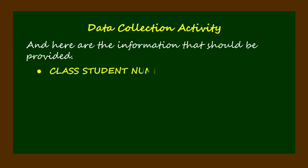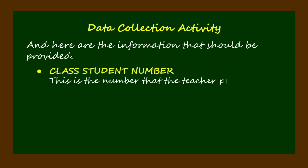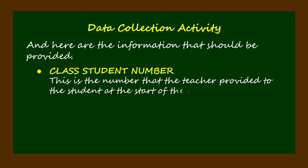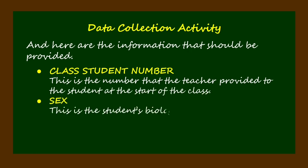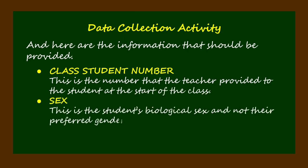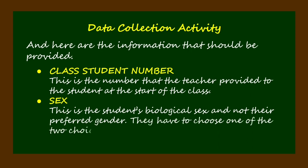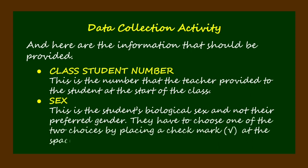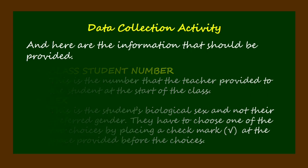Here are the information that should be provided. Class student number — this is the number that the teacher provided to the student at the start of the class. Sex — this is the student's biological sex and not their preferred gender. They have to choose one of the two choices by placing a check mark at the space provided before the choices.